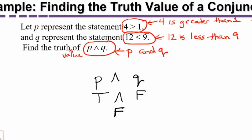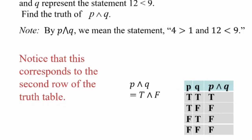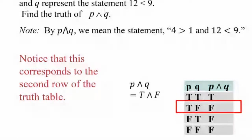Of course, statements get a lot more complicated than this — this is just where we're starting. You can also identify this in the truth table we looked at earlier. What we're asking is the same scenario as the second row of the truth table: when P was true and Q was false, we got false. I hope you found this video helpful. If you did, please remember to give it a thumbs up — that helps other students find the video.